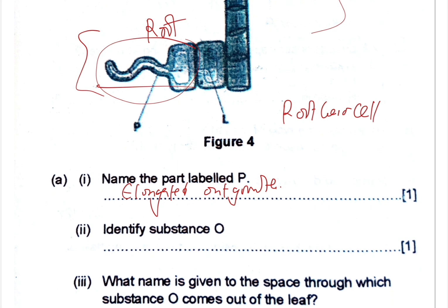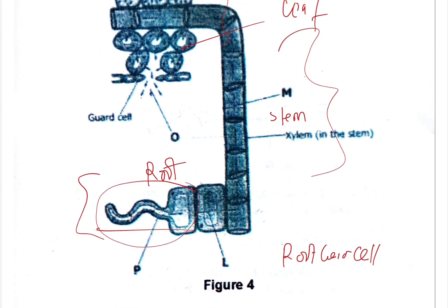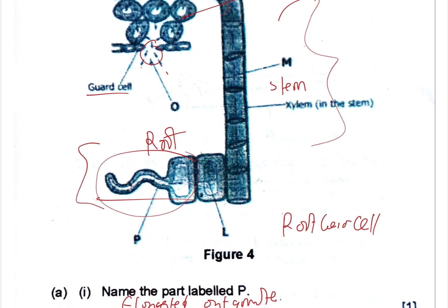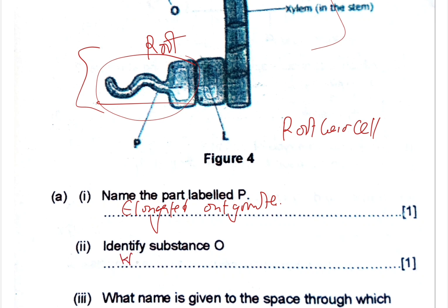Question two: identify the substance O. From the diagram, the substance O is here on the leaf section. We have an opening here where we can see the guard cell, and there is an opening where substance O is coming out. So that is water vapor coming out through the process of what we call transpiration. You should be able to know how to define that term.